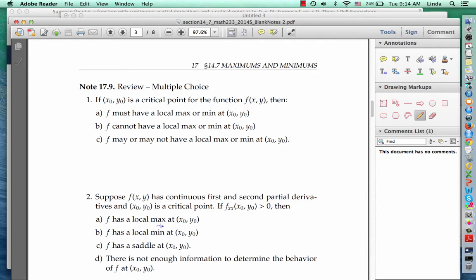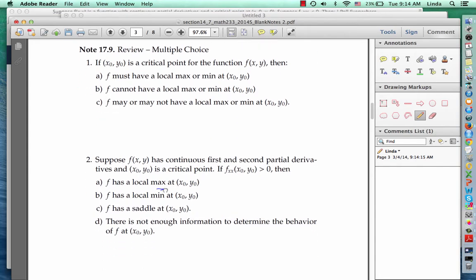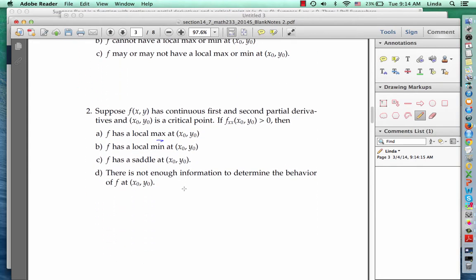For the second question, suppose f has continuous first and second partial derivatives and x naught y naught is a critical point. If f sub xx at x naught y naught is positive, then you should have answered there's not enough information to determine the behavior.